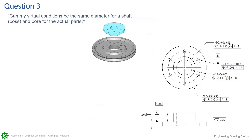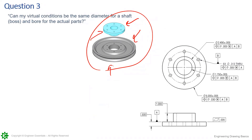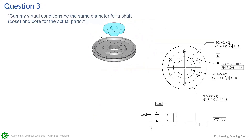Question three: can my virtual conditions be the same diameter for a shaft, a boss, and a bore for the actual part? We have an assembly here — the same part we were just talking about — and we've added this little pulley. So now we have an assembly. We know this part assembles to this pulley. If we're going to do some calculation to make sure that when we bolt these together, this boss is not going to interfere with this bore.